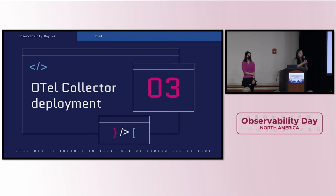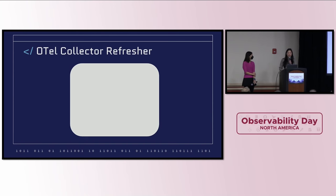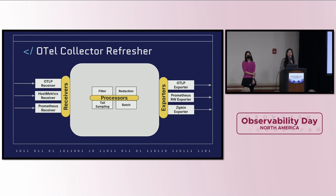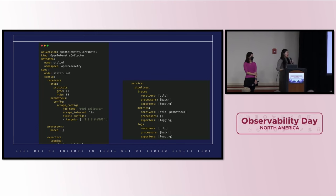Once you have cert manager or the right TLS provisions set up, you can go ahead and deploy the collector. The collector is a versatile component that ingests telemetry from a variety of sources, transforms that data according to how you've configured it, and then sends it off to one or more backends that can accept the OpenTelemetry data format. It's also supported by optional functionality called connectors and extensions. The operator has a custom resource, or CR, called the OpenTelemetry Collector CR, that manages the deployment of the collector.